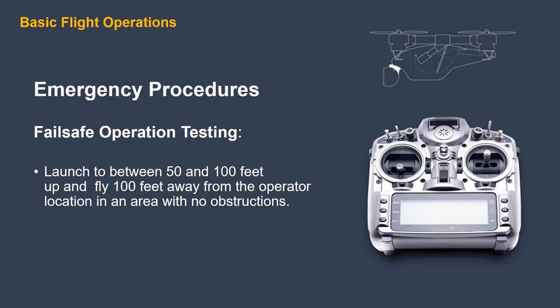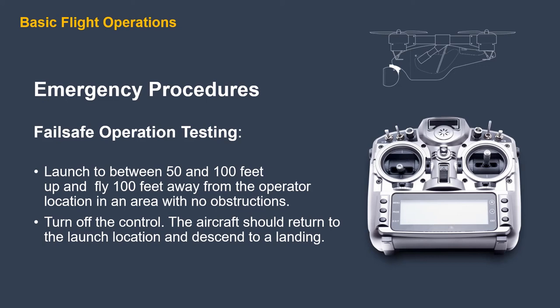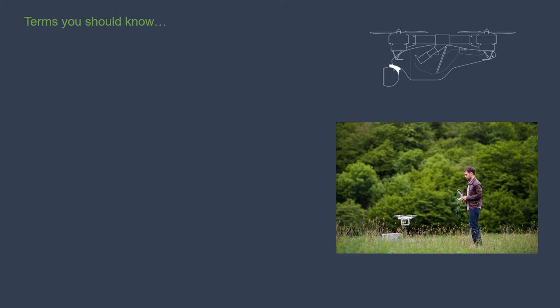Emergency procedures testing — fail-safe operation: launch to between 50 and 100 feet up, then fly 100 feet away from the operator location in an area with no obstructions. Turn off the control and the aircraft should return to the launch location and descend to a landing on its own. Keep in mind that in many cases, the return to land by GPS is plus or minus 6 to 20 feet or maybe more. Give yourself some safety room and be prepared to take over the landing in case wind or other factors affect the touchdown.